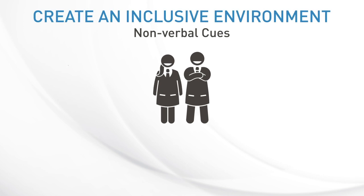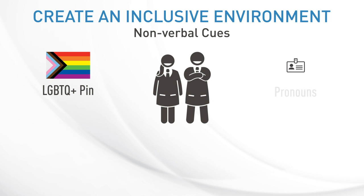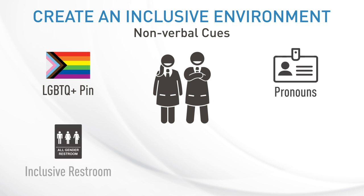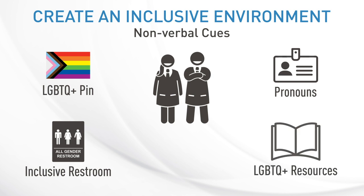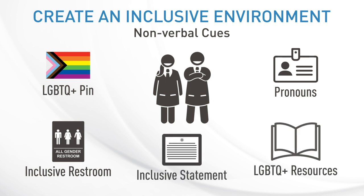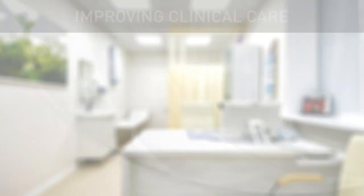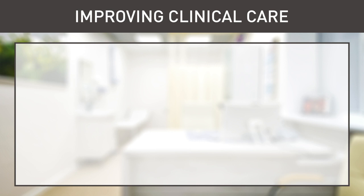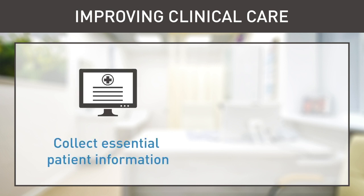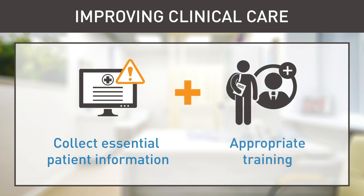You can also create an inclusive environment through nonverbal cues — for example, by wearing a rainbow pin, indicating pronouns on your name tag, having gender-inclusive restrooms, including LGBTQ+ magazines and resources in the waiting room, and displaying an inclusive non-discrimination statement in your office. It is also essential that sexual orientation and gender identity are systematically collected in the electronic health record in a culturally responsive manner, accompanied by appropriate training. This improves clinical care and identifies ongoing disparities in need of intervention.